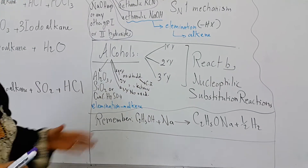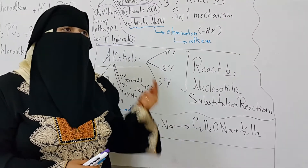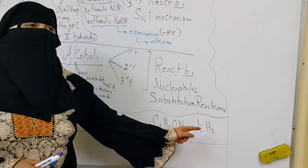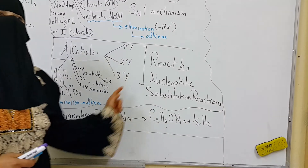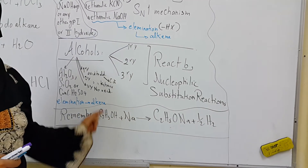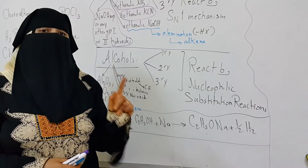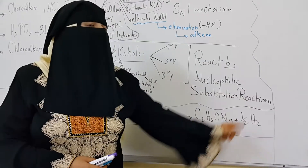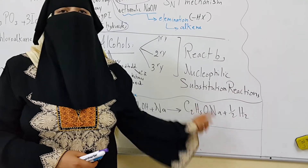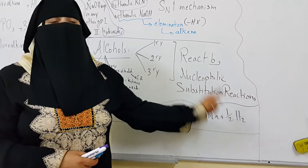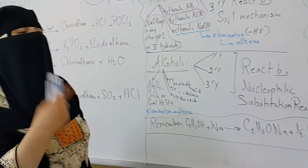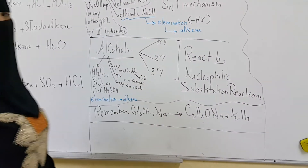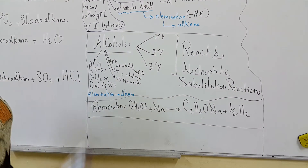Alcohols can react with sodium metal to give a salt plus hydrogen gas. If the alcohol contains one hydroxyl group, half a mole of hydrogen is produced from one mole of alcohol. If the alcohol carries more than one hydroxyl group, the amount of hydrogen gas increases as the number of OH groups increases in the molecule.